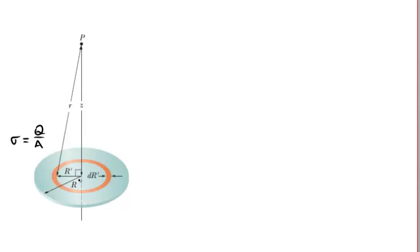Our disk has a radius, capital R, as indicated here, and we're interested in what the potential, the electric potential, that will exist from this charged disk at some location on the axis of the disk, here at point P, some distance z away from the centre of the disk.